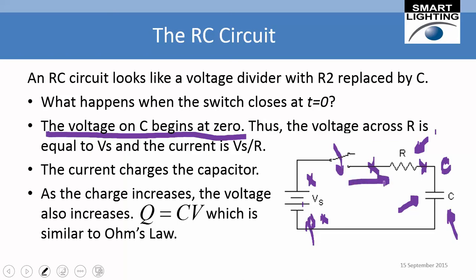We need current to flow to produce charge on the capacitor. A voltage across the resistor drives current, which begins to charge the capacitor. As the charge increases, the voltage also increases via q equals cv. This continues until something stops the process — think about what that would be.